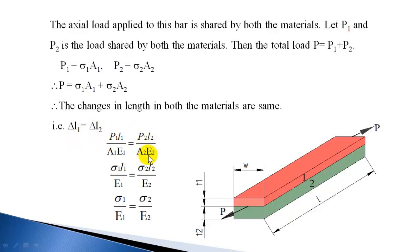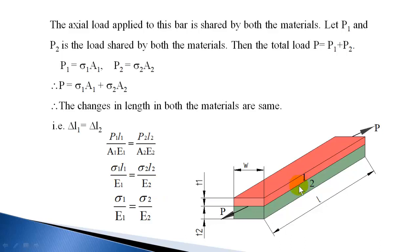Delta L2 = P2 × L2 / (A2 × E2). Since P1/A1 = sigma1 and P2/A2 = sigma2, we can write: sigma1 × L1 / E1 = sigma2 × L2 / E2. Since in this case the lengths are equal, this simplifies to sigma1 / E1 = sigma2 / E2. This gives another equation for the composite bar.